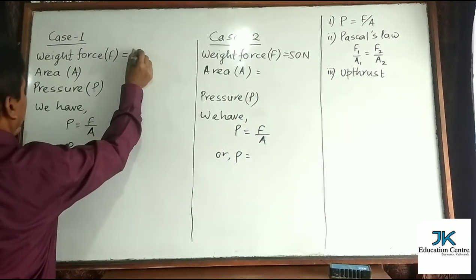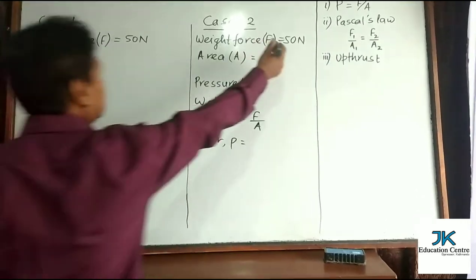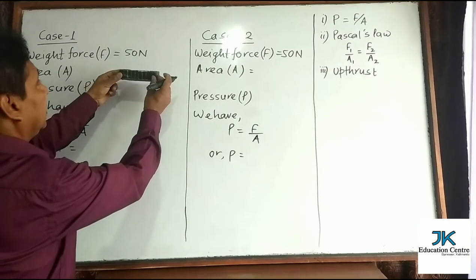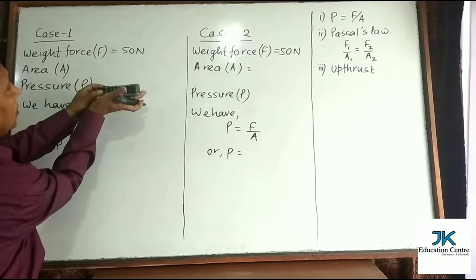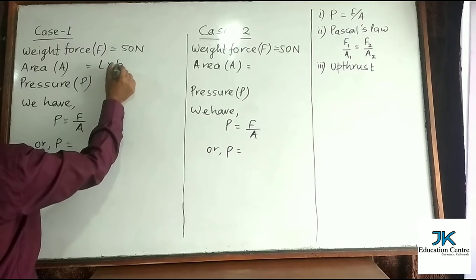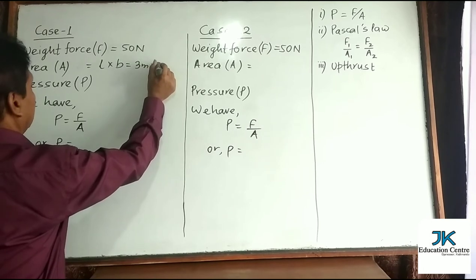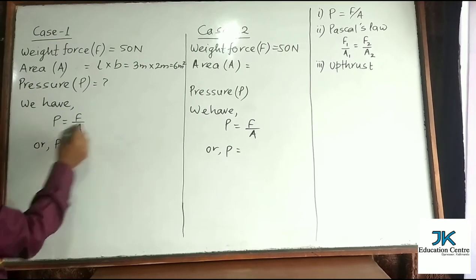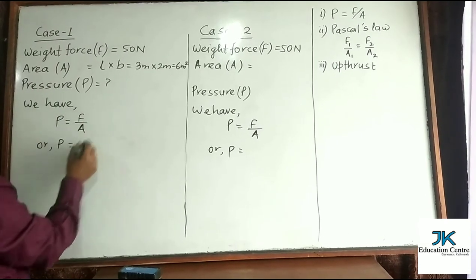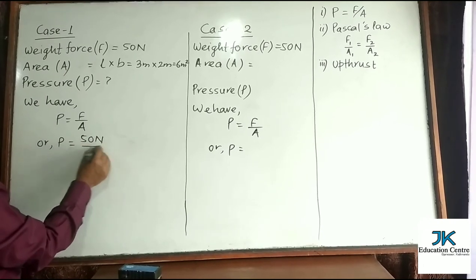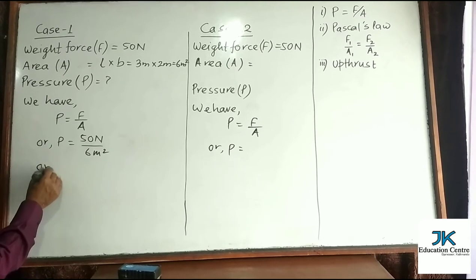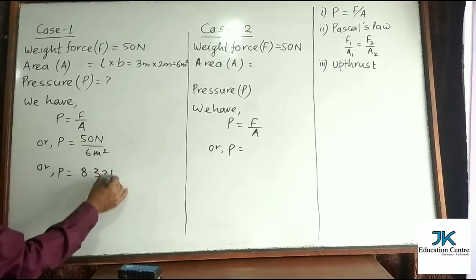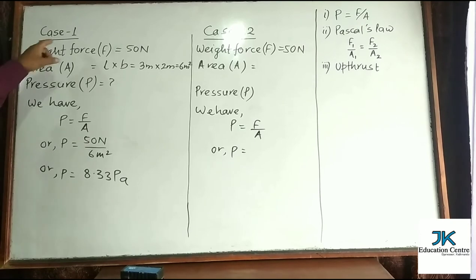In both cases, weight force F = 50 Newton. In case one, the body is lying length and breadth wise, so area = length × breadth = 3 m × 2 m = 6 m². Pressure P = F/A = 50/6 ≈ 8.33 Newton per meter square (Pascal). This is the pressure exerted by the body in the first case.